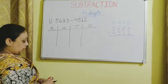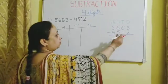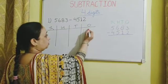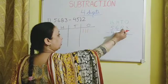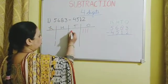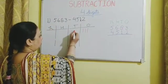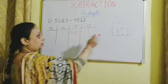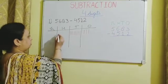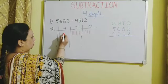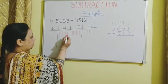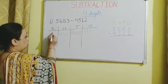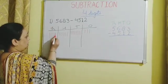We draw columns for 1000s, 100s, 10s and 1s. In the 1s place we have 3 ones. In the 10s place we have 8 tens. In the 100s place we have 6 hundreds. And in the 1000s place we have 5 thousands.